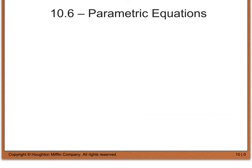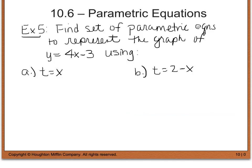Our first few examples involved sketching graphs represented by parametric equations. For our next example, we reverse this process: given a graph, we want to find the set of parametric equations. Example five says: find the set of parametric equations to represent the graph of y equals 4x minus 3. Part a says to use t equals x. So we write x equals t and substitute into the equation, giving us y equals 4t minus 3.